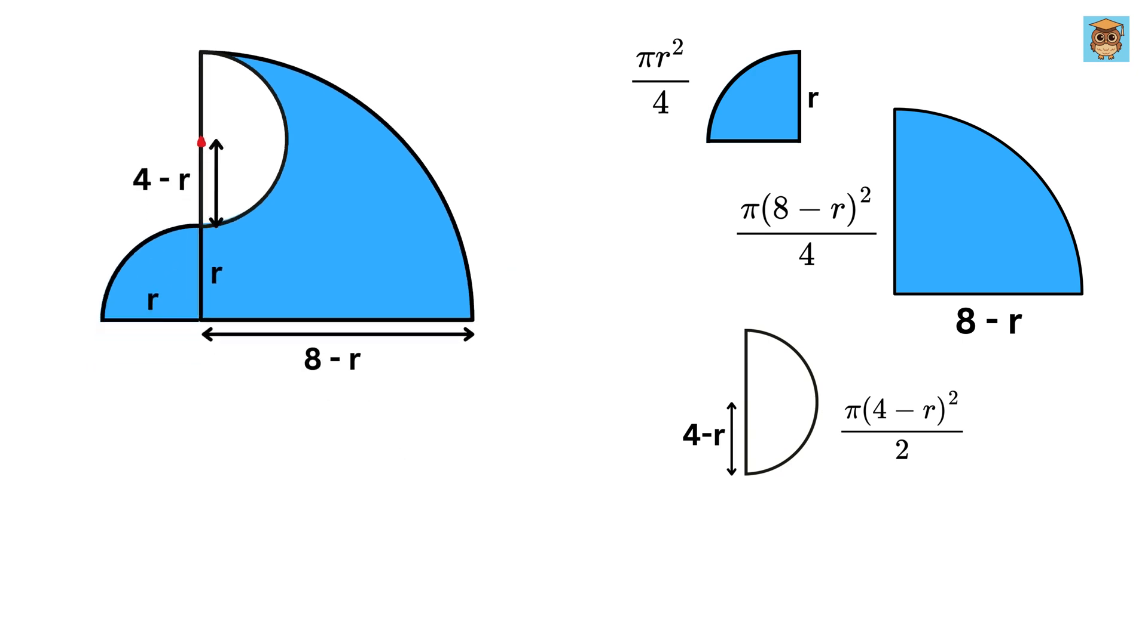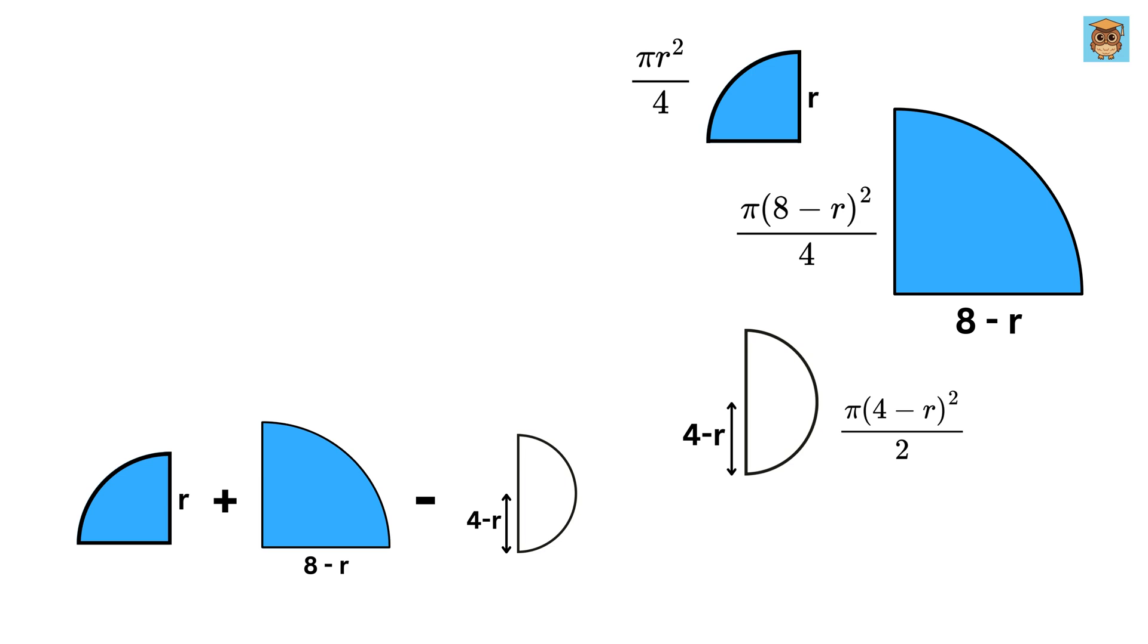But this is not what we want. We need the area of this blue region, and this region's area equals the area of this quarter circle, plus the area of this quarter circle, and then we have to remove this semicircle from it, or it will be minus the area of this semicircle. So, it will be this plus this minus this.